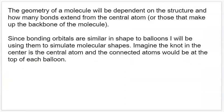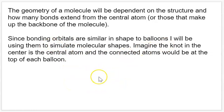The geometry of a molecule is always going to be dependent on the structure and how many bonds extend from the central atom. For more complex molecules, it depends on the geometry of the backbone atoms. If you have atoms chained together making a larger structure, the overall geometry is going to be influenced by those backbone atoms. In the next few slides, I'll be using balloons to represent bonding orbitals to simulate molecular shapes, with the knot in the center being the central atom.